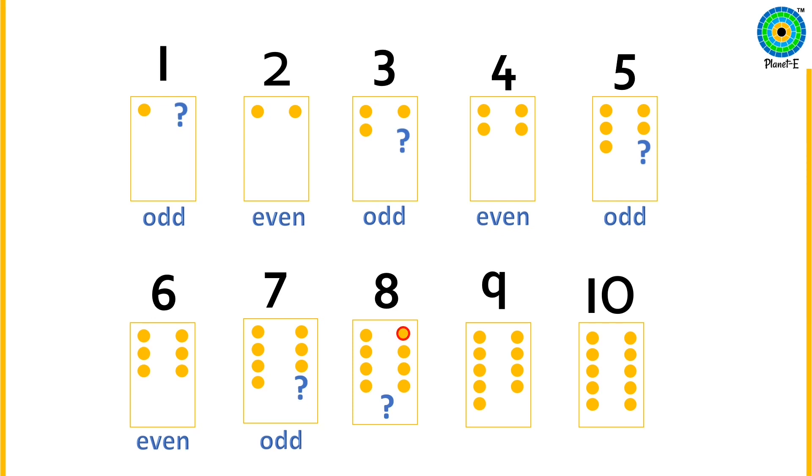Eight. Every dot must have a friend to be even. Eight, that is an even number.